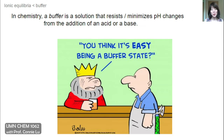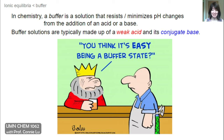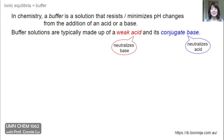In this course, a buffer is a solution that can resist or minimize pH changes from the addition of an acid or a base. Typically buffer solutions are made up of a weak acid and its conjugate base. The weak acid inside the buffer can help protect against any added base by reacting with it to neutralize it. Likewise, the conjugate base can help protect against any added acid by neutralizing it as well.